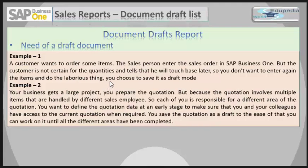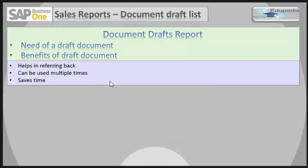The second example: your business gets a large project and you prepare a quotation, but it involves multiple items handled by different sales employees. Each person is responsible for a different area of the quotation. You want to define the quotation data at an early stage so that you and your colleagues have access to the current quotation when required, so you save it as a draft.